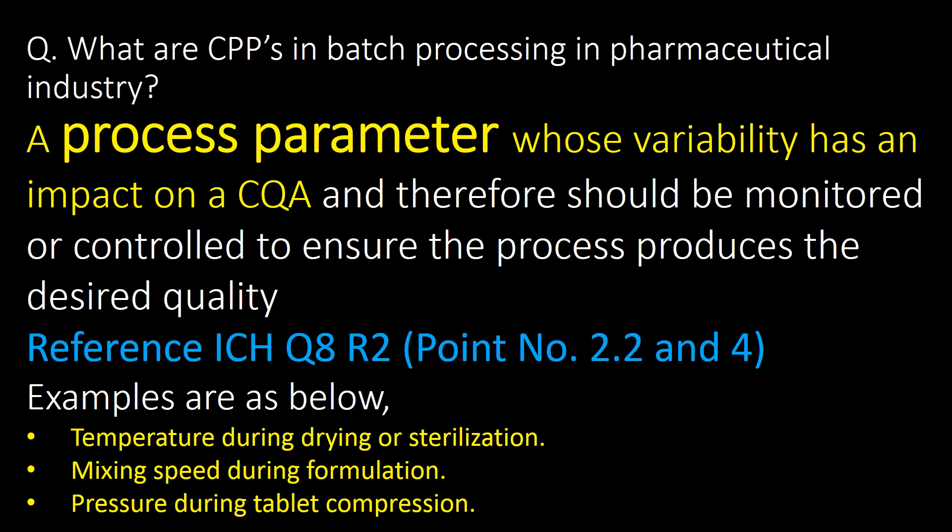Starting with a very basic and important question: what are CPPs in batch processing in the pharmaceutical industry? CPP is a process parameter whose variability has an impact on a CQA and therefore should be monitored or controlled to ensure the process produces the desired quality. Examples are temperature during drying or sterilization, mixing speed during formulation, and pressure during tablet compression.